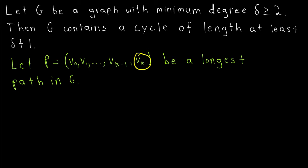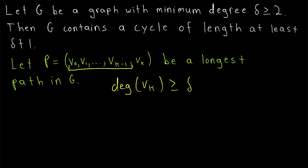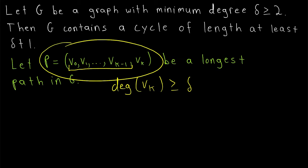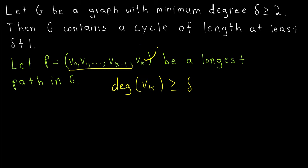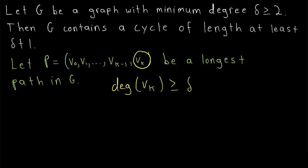vk has at least delta neighbors, and we know that all of those at least delta neighbors must lie among the other vertices in the path. vk has at least delta neighbors because that's the minimum degree of our graph. If vk had any neighbor not on the path, then we could extend the path by joining that neighbor to the end, which would be a longer path — contradicting the definition of P as a longest path. So all of the at least delta neighbors of vk lie among the other vertices in our path, and we know vk has at least two neighbors, so vk minus 1 isn't vk's only neighbor.